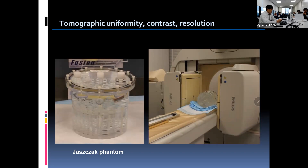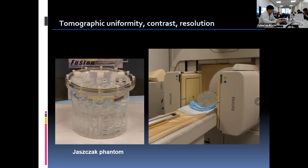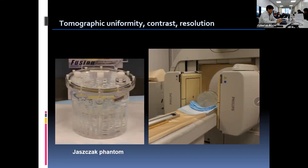For this test, we use a Jaszczak SPECT phantom, which is fillable with a solution containing radioactive material. 15–20 millicuries of technetium need to be thoroughly mixed with water inside the phantom for uniform distribution of activity. Then the phantom is placed between the detectors, centered on the field of view for SPECT acquisition. It is important that the phantom be positioned parallel to the scanning table to get proper imaging for evaluation. The SPECT acquisition is performed in 180-degree dual head position or 360-degree total angle of rotation, acquiring 25 to 30 million counts total.